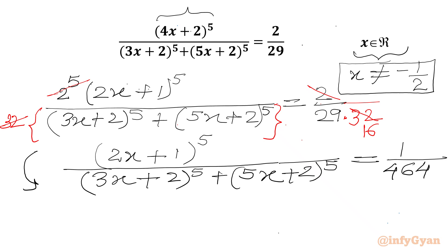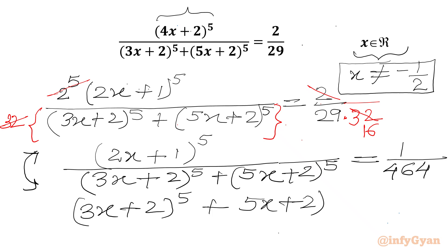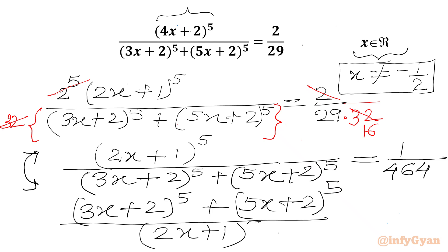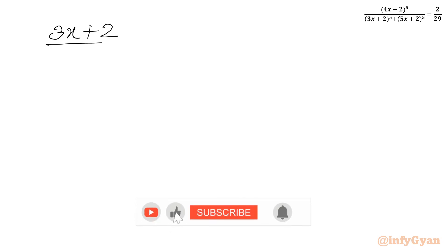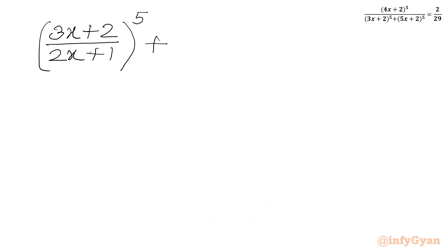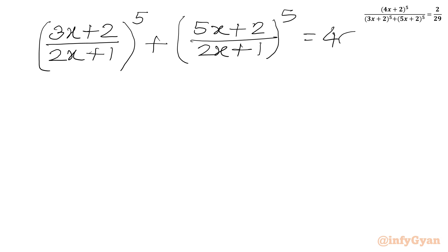Now I will flip our numerator and denominator. So we can write our equation as (3x+2)^5 plus (5x+2)^5 over (2x+1)^5, equal to 464.